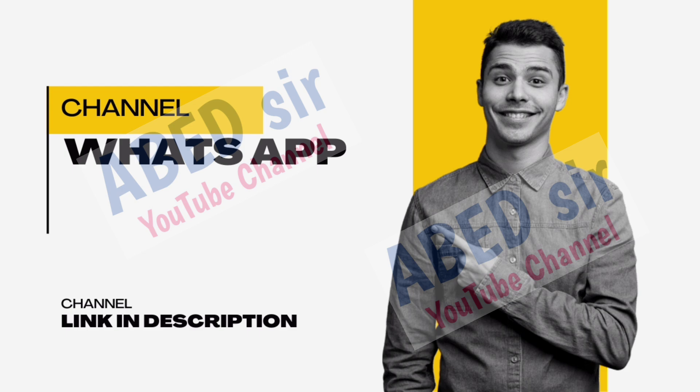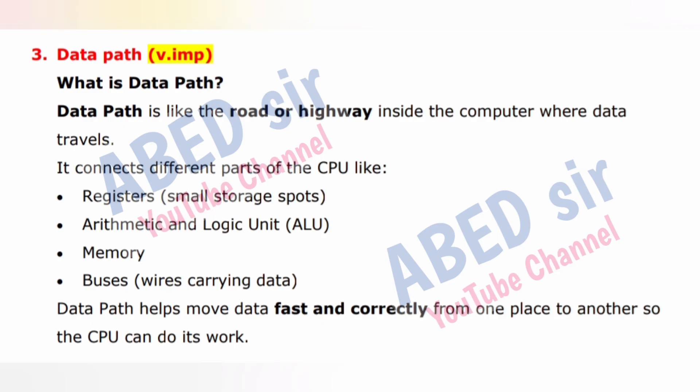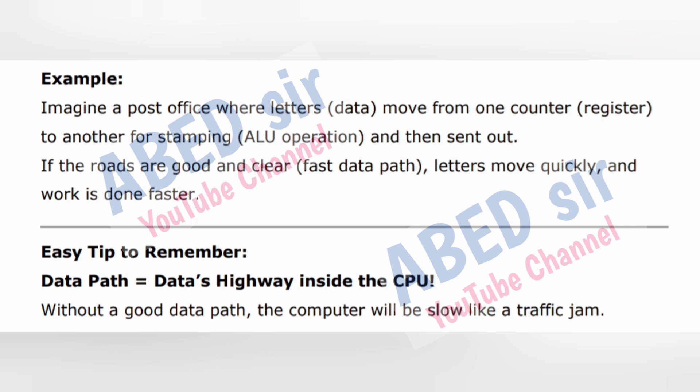Next important short question is 3: What is Data Path? Data path is like the road or highway inside the computer where data travels. It connects different parts of the CPU like registers (small storage spots), Arithmetic and Logic Unit (ALU), memory, and buses (wires carrying data). Data path helps move data fast and correctly from one place to another so the CPU can do its work. Example: Imagine a post office where letters (data) move from one counter (register) to another for stamping (ALU operation) and then sent out. Easy tip: Data path = data's highway inside the CPU. Without a good data path, the computer will be slow like a traffic jam.